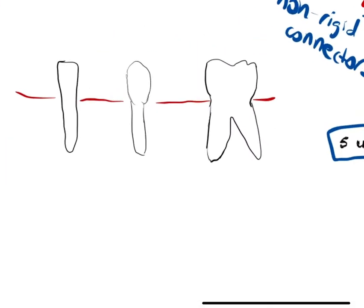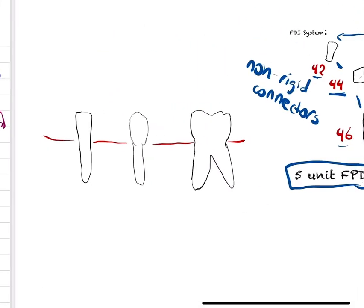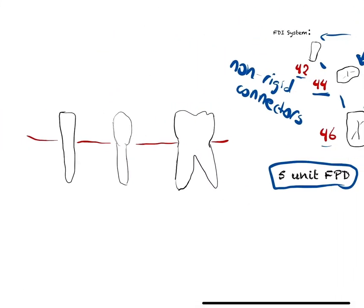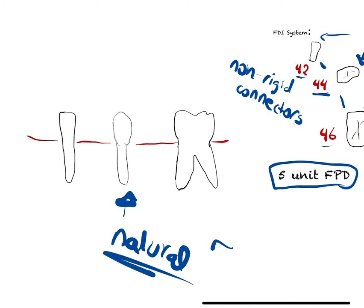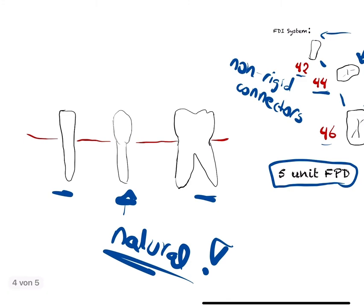Here we have another perspective. You can see the pier abutment — it's a natural tooth, and that's important — and here we have the terminal abutments where we put the bridge all together.